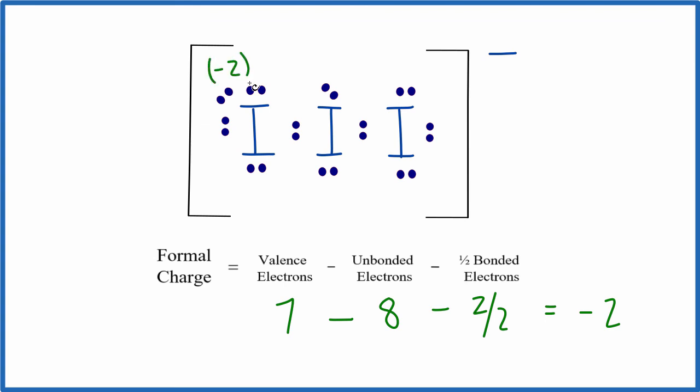So I can already see these formal charges aren't as good as the ones where we had 0. And that tells me that those extra electrons should all go on the central iodine atom. This is Dr. B with the formal charges for I3 minus, and thanks for watching.